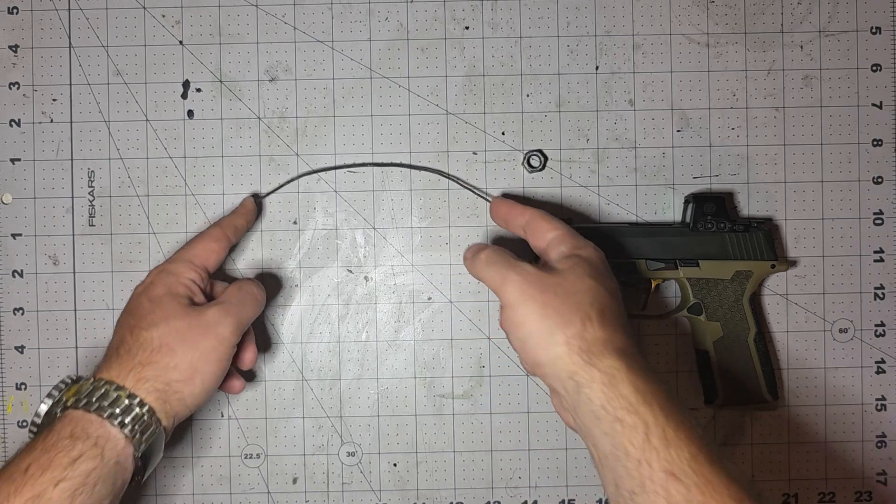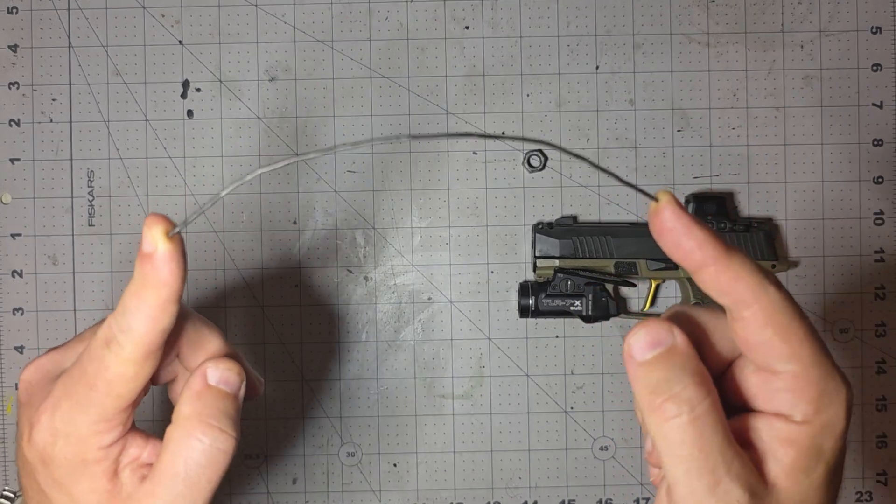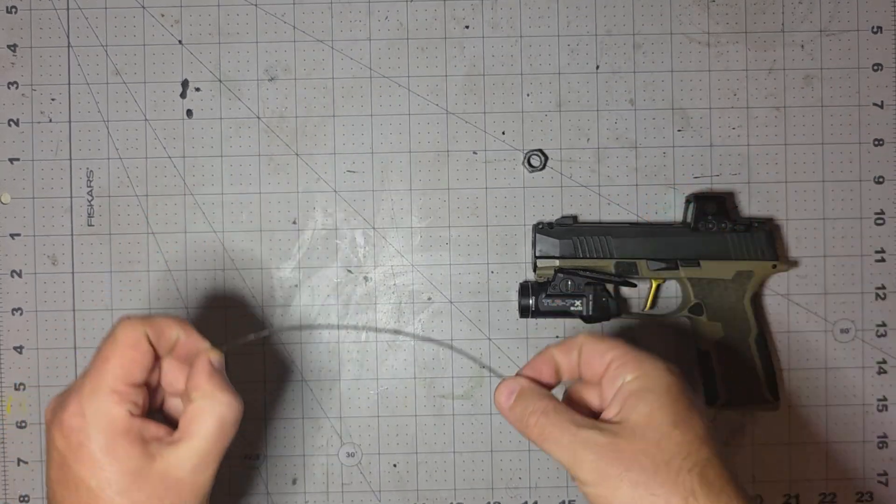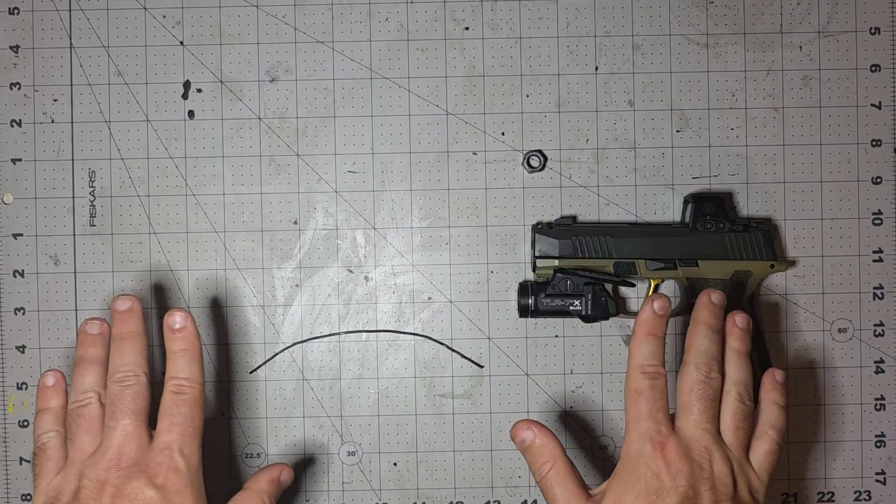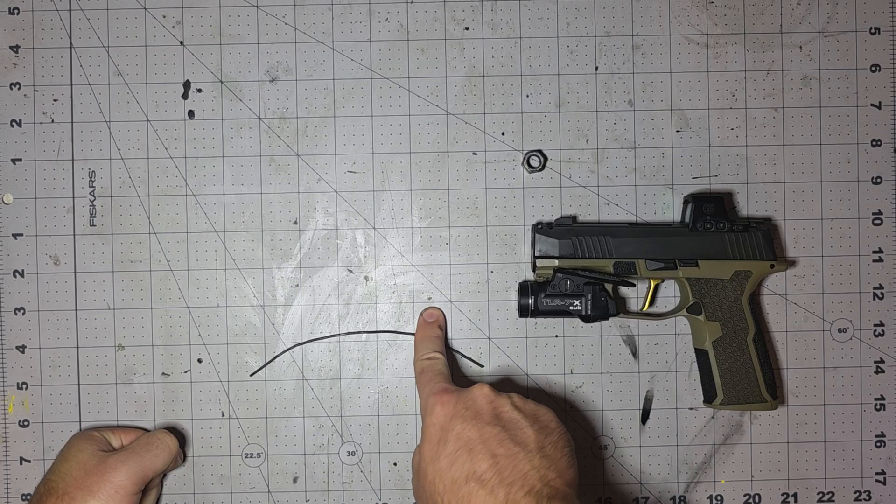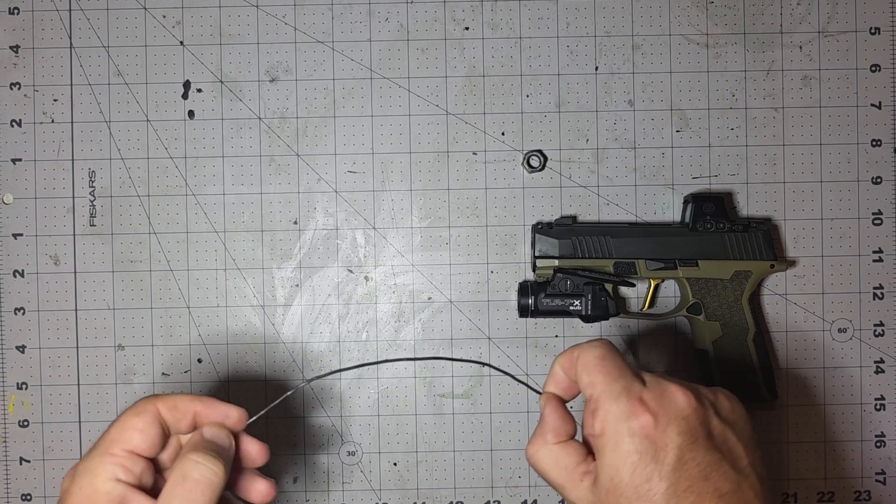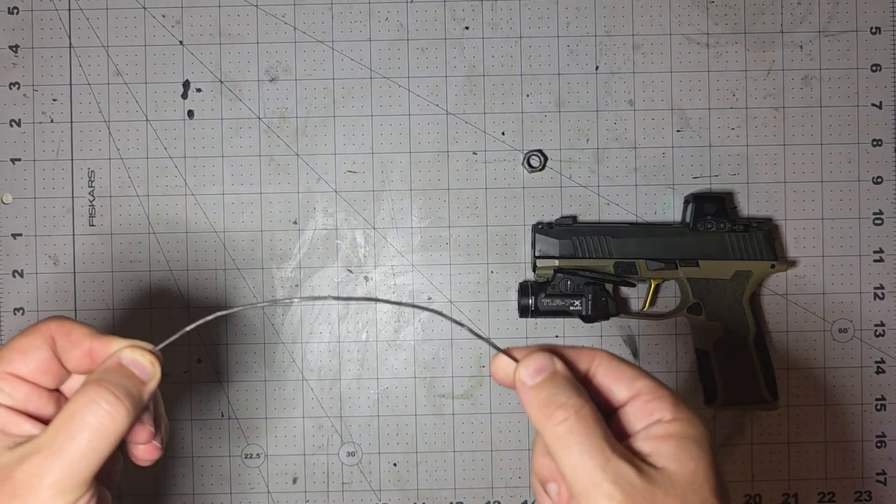You can look up charts for each bullet and each weight and figure out exactly what yardage will zero to what. So I use 9mm 115 grain bullets, and when I zero, I zero for 12 yards. And the reason I do that is because I've looked up these charts, and it says 12 and 50 yards.